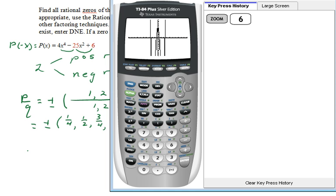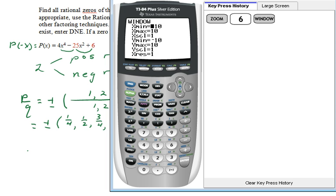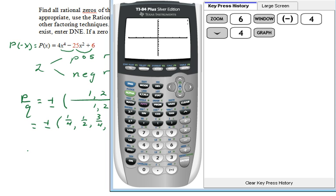And here we see the graph. It appears as if the real zeros are all between plus or minus 3. How about if we go back into the window and enter -4 for the x min and +4 for the x max and then graph it again.